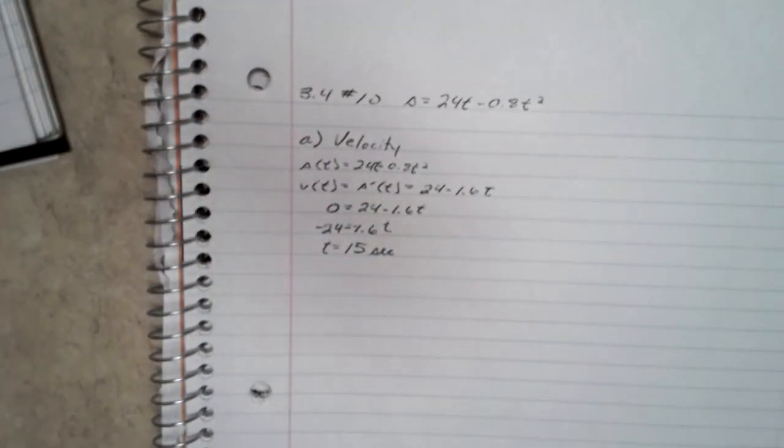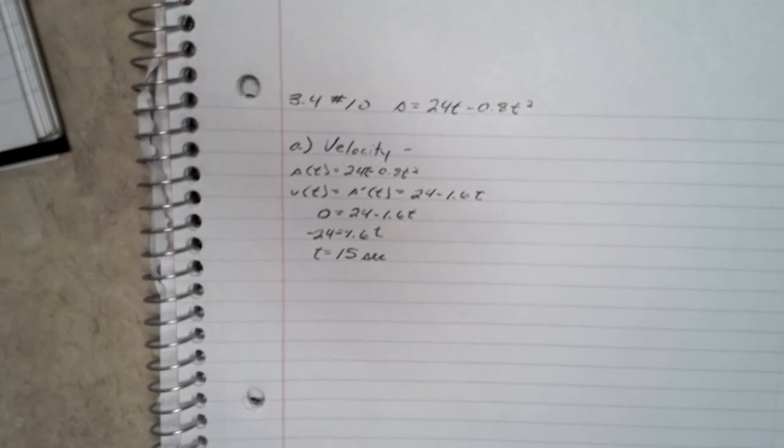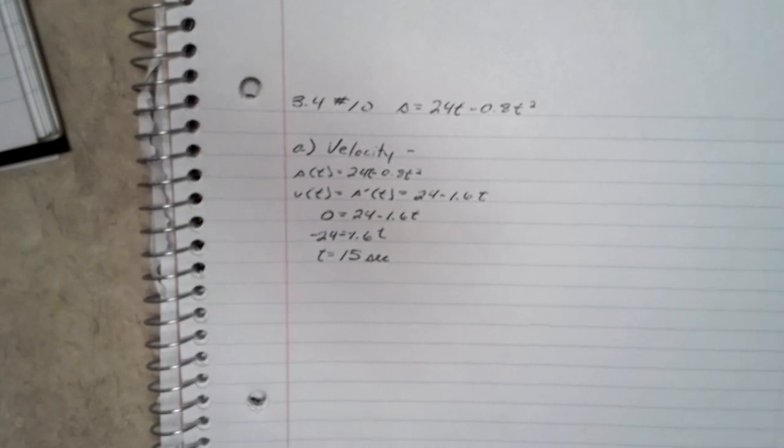And then to find the velocity, I just plugged in 15 seconds for t. What work are you doing here? It's not asking when the velocity is 0. It's just asking for the velocity and acceleration functions. You don't know what t is, do you? That was just 24 meters per second.